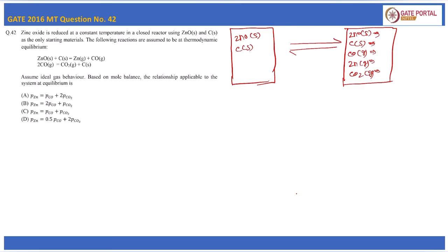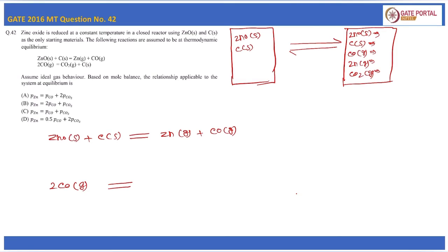Let's write the reactions. Reaction 1: ZnO(s) + C(s) → Zn(g) + CO(g). Reaction 2: 2CO(g) → CO₂(g) + C(s). One mole of carbon dioxide in the gaseous form plus one mole of carbon in the solid form.